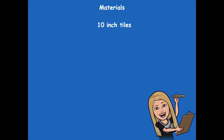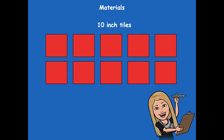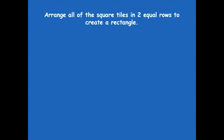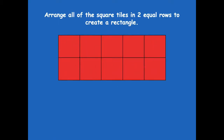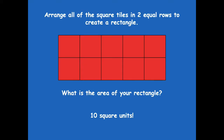Alright friends, now we don't need those centimeter tiles anymore — you need 10 inch tiles. Go ahead and pause the video, grab 10 inch tiles only, then click play when you're ready for the next step. You're going to arrange all of the tiles into two equal rows to create a rectangle. Go ahead and take those 10 tiles and put them in two equal rows. Here's what I came up with — what's the area of your rectangle? Yeah, 10 square units because we have 10 of our tiles.